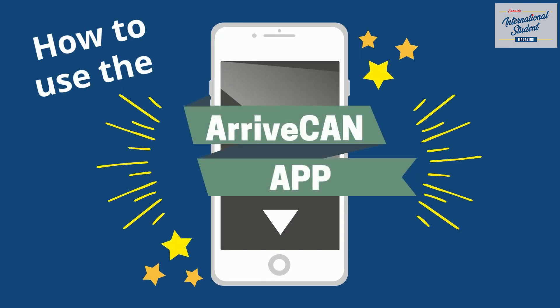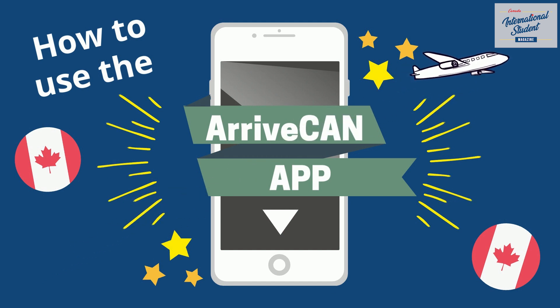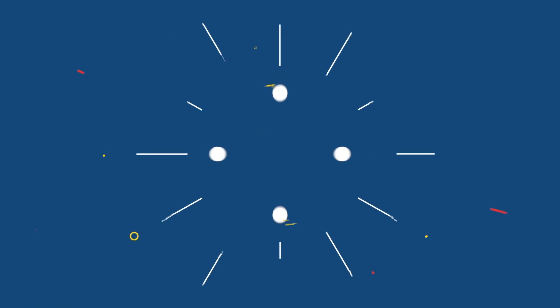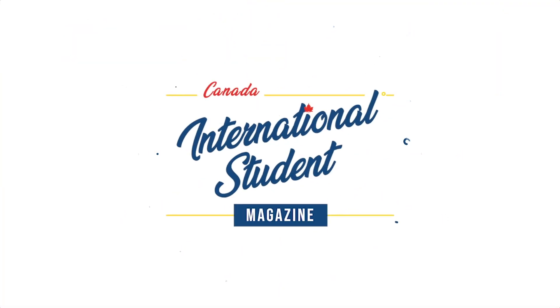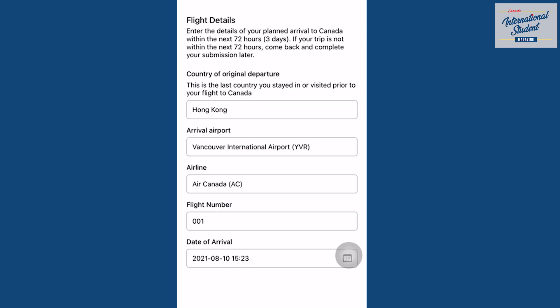How to use the ArriveCAN app. After you've signed up and made an account, the first page you'll see is how are you entering Canada. As most students will be traveling by air, we'll select that box. Then fill in your flight details. Here's an example.